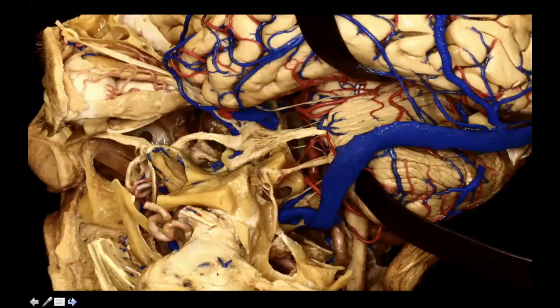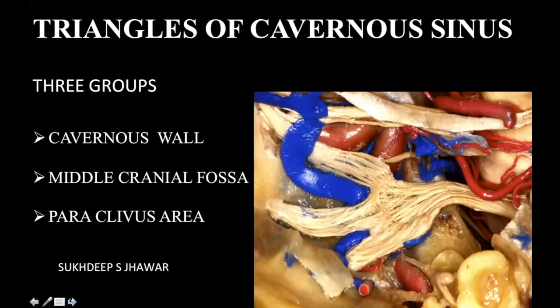As a neurosurgeon, we are so used to watching this anatomy from the top. Once introduced through the endoscope, we sometimes get confused. You have to do a lot of hands-on dissections, go to the lab, do cases, and then see the pathologies — how they distort the anatomy and how the anatomy will help you in removing those pathologies.